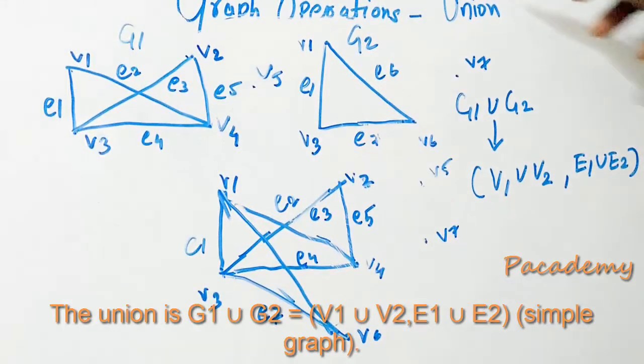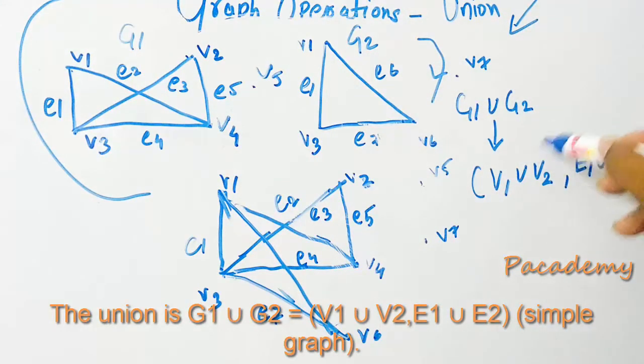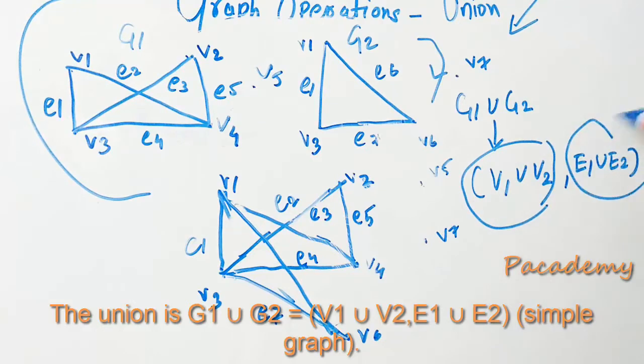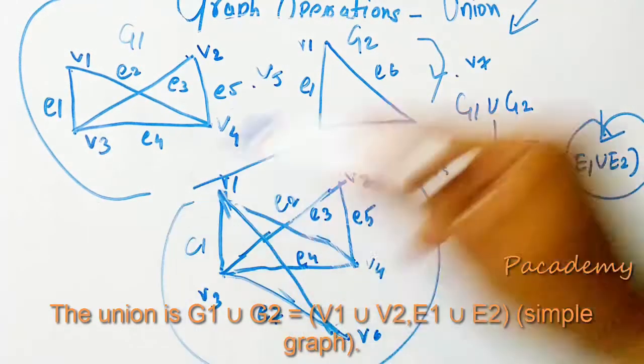For simple operation on graph of union, if there are two graphs G1 and G2, then the union needs the union of all the vertices and the union of all the edges in both the graphs. So this is the graph which is the union of both the graphs.